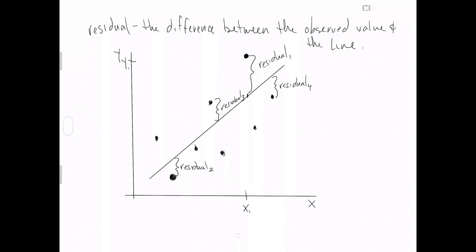Each observation in our data set has a residual after we fit the line — we can just calculate that difference, or ask R to calculate it for us. All the dots have corresponding x-axis and y-axis values, but moreover, for a particular value on the x-axis, there is a predicted value on the y-axis.